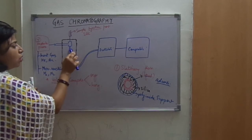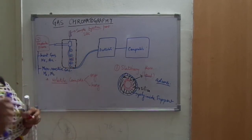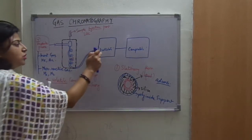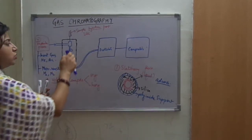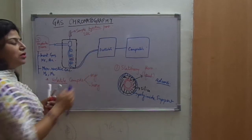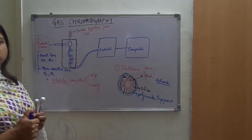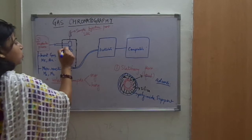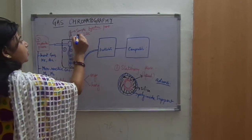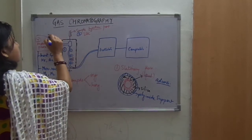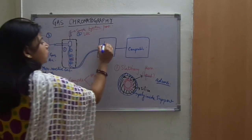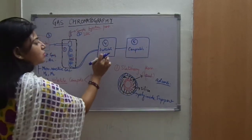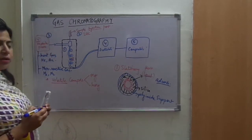The sample component which is pushed first will move the farthest and reach the detector first, and the one pushed least will reach the detector last. The parts of gas chromatography are: first the column, second the sample, third the mobile phase, fourth the detector, and fifth the computer. We will discuss the detector and computer later on.